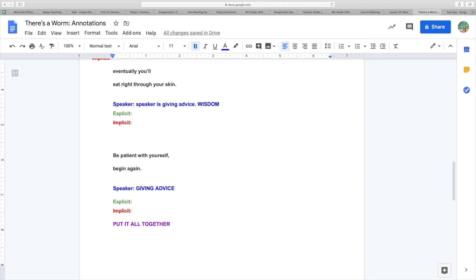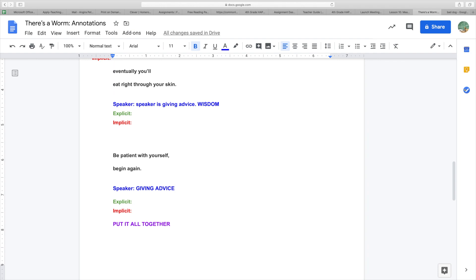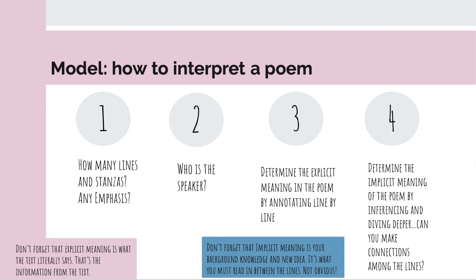Now that I've gone over steps one and two, I want to move into steps three and four. Unlike step two where I annotated for the speaker in the entire poem, I'm only going to work on stanzas two and three for steps three and four. I would very much like you to go back into this poem and apply all four steps to all four stanzas for homework. Step three says to determine what the explicit meaning of the poem is. To best do this, you should break up the stanza by each line and think: what is this line literally telling me?